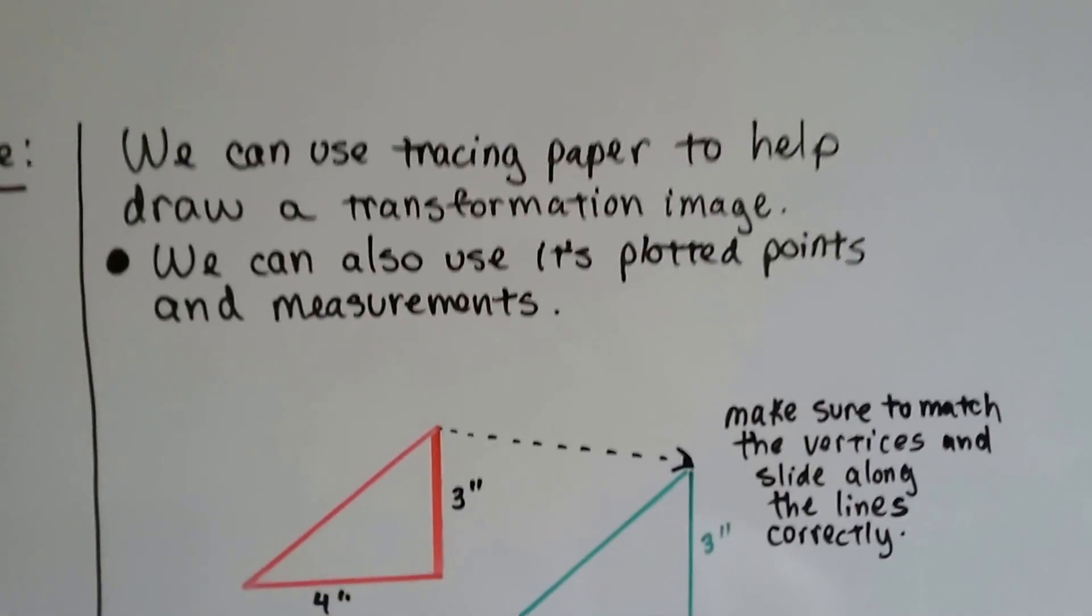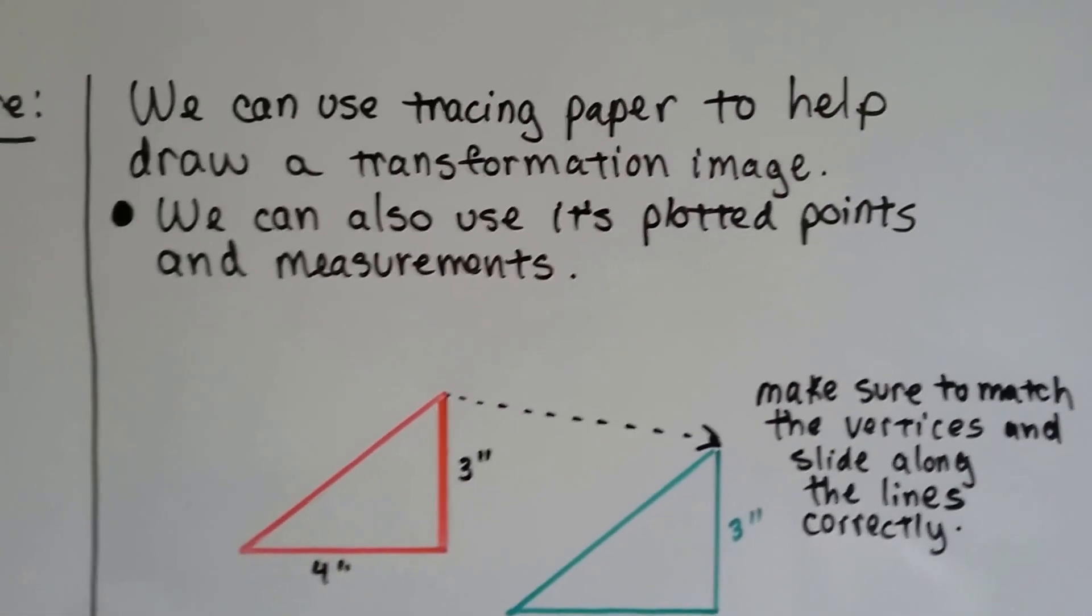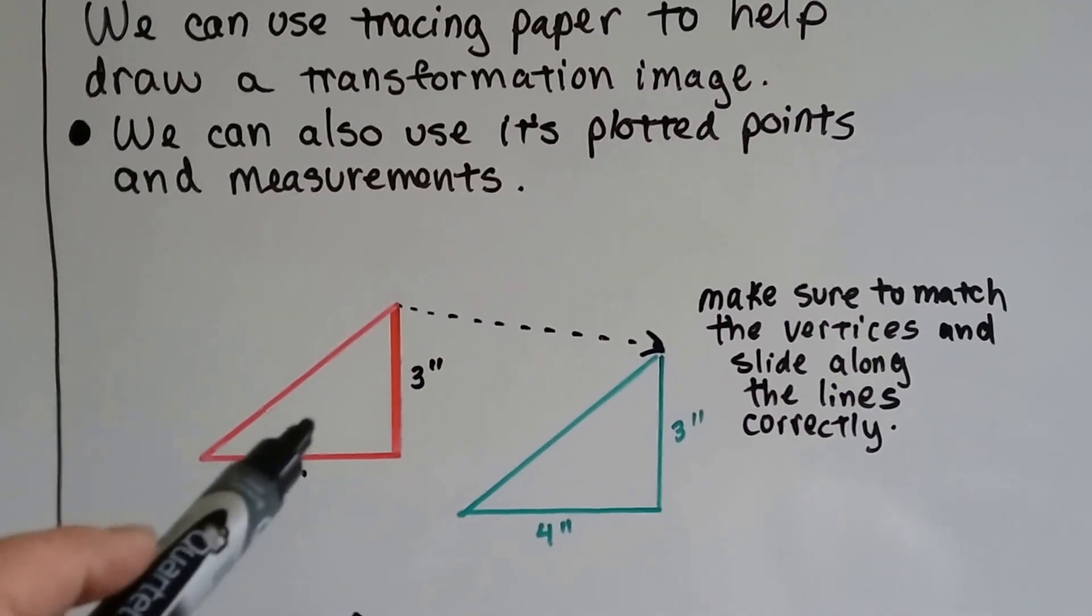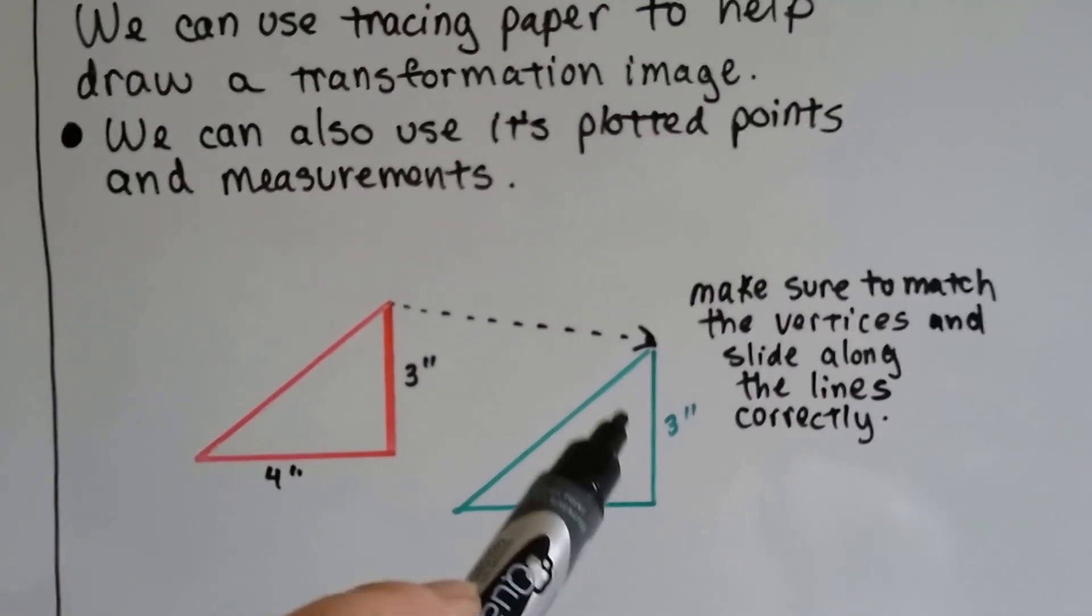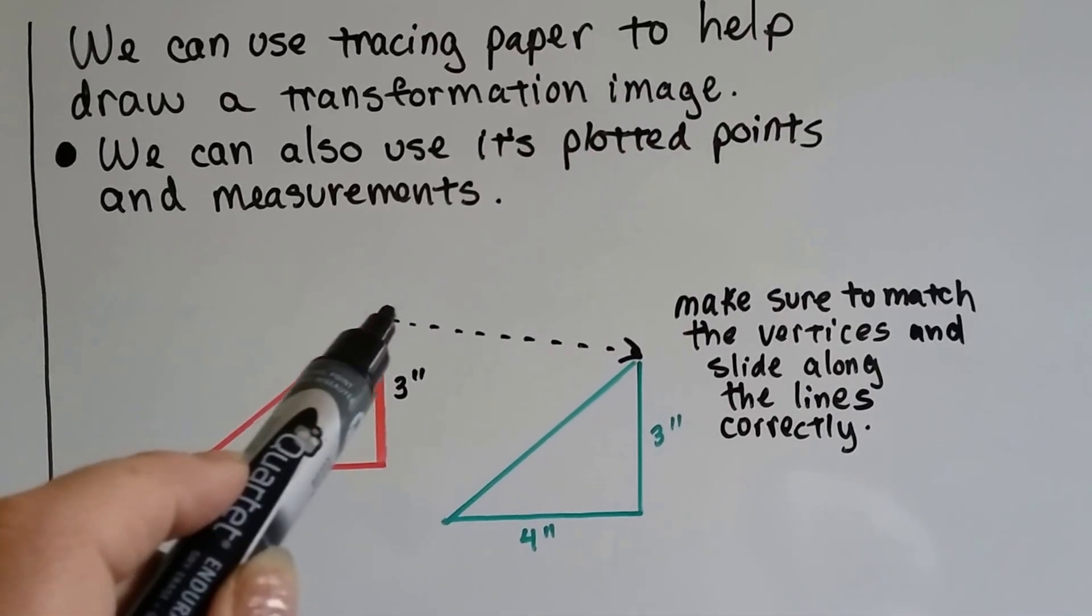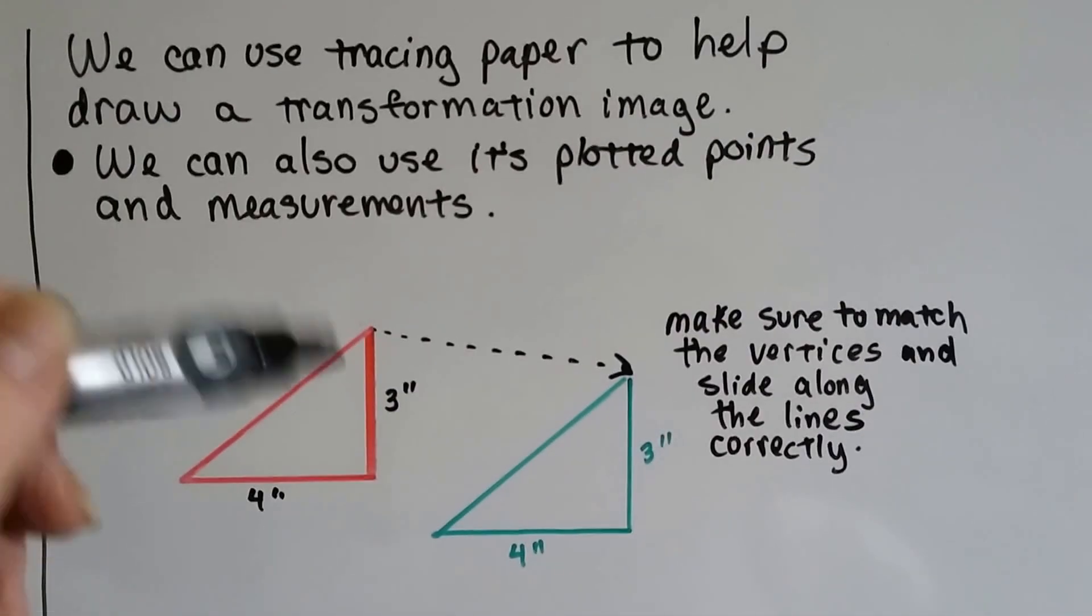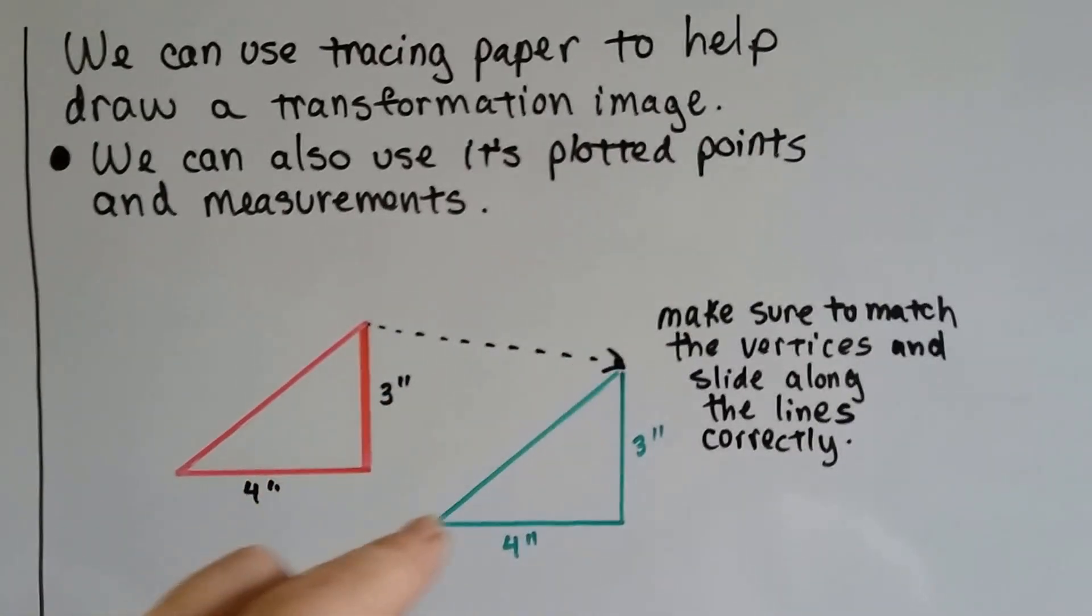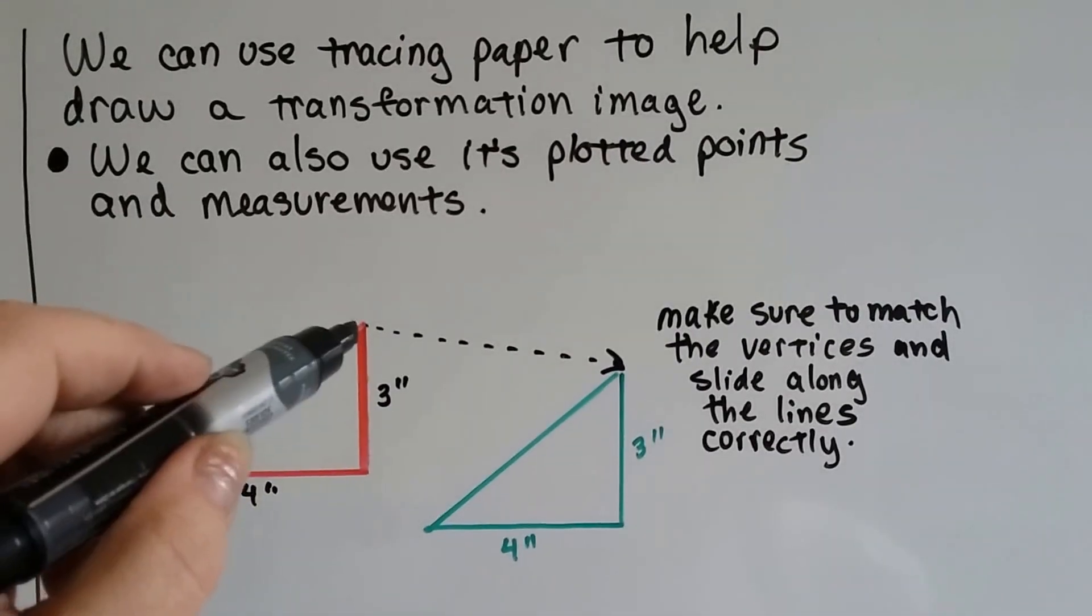We can use tracing paper to help draw a transformation image. We can also use its plotted points and measurements. If we wanted to move this figure to this spot, and all we had was this point, and then it matched this one, we could either trace it with paper, and then slide the paper over, and then transfer the tracing.